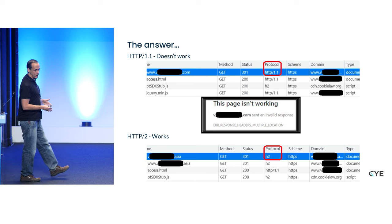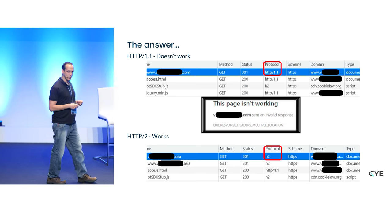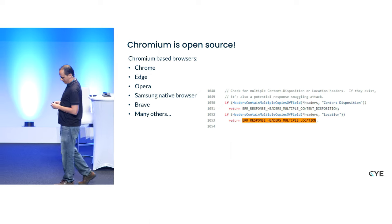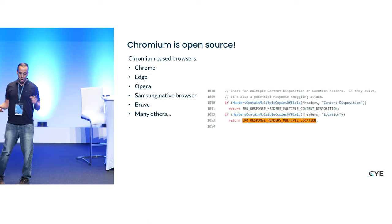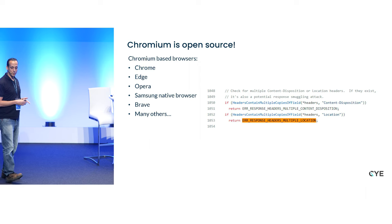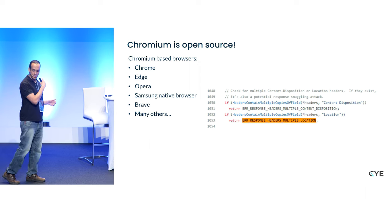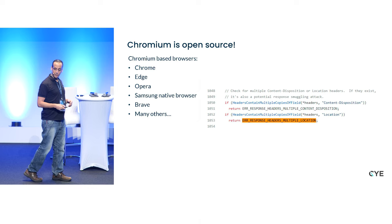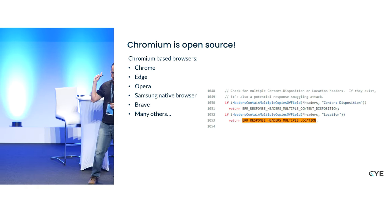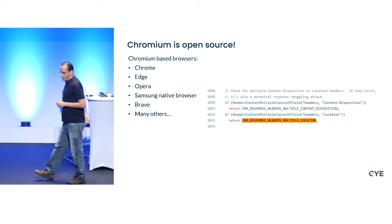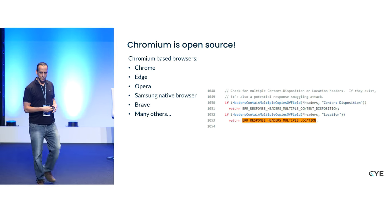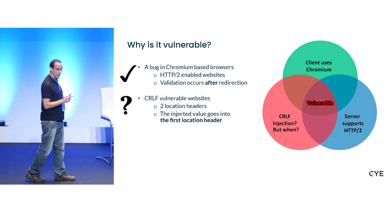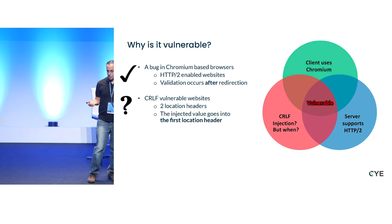We started digging in. Chrome is actually based on an open source project called Chromium — the most common web browser engine out there, used by all major browsers including Microsoft Edge, Opera, and Samsung's native browser. So all of them reacted the same. We started to debug Chromium because it's open source, and eventually we found the location where you get the error with HTTP 1.1 but not with HTTP 2.